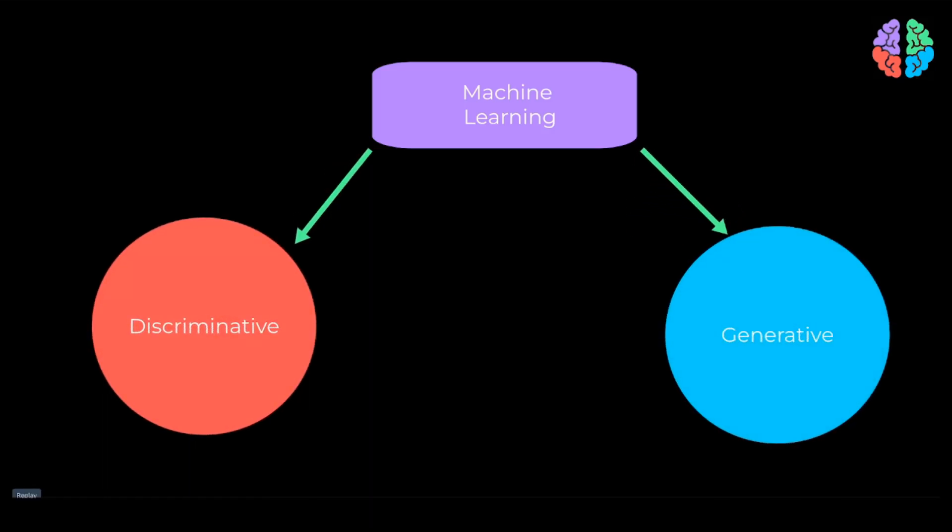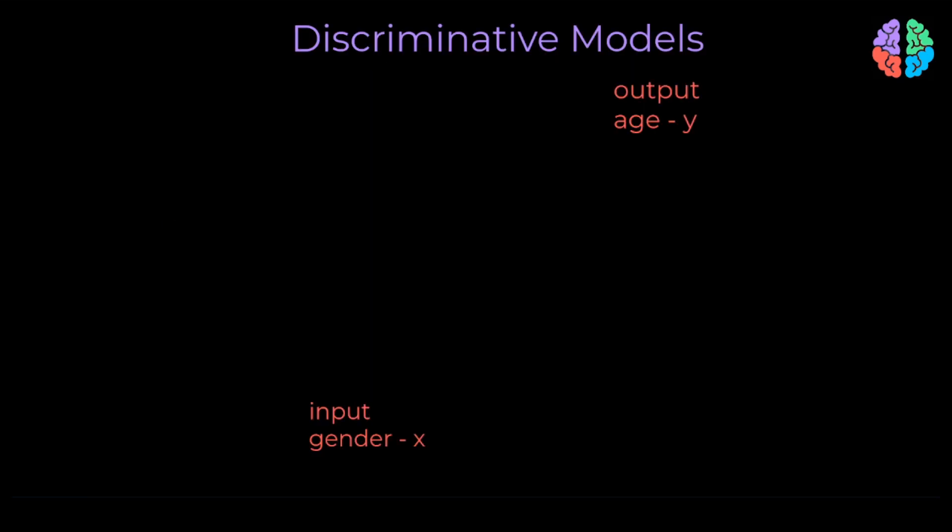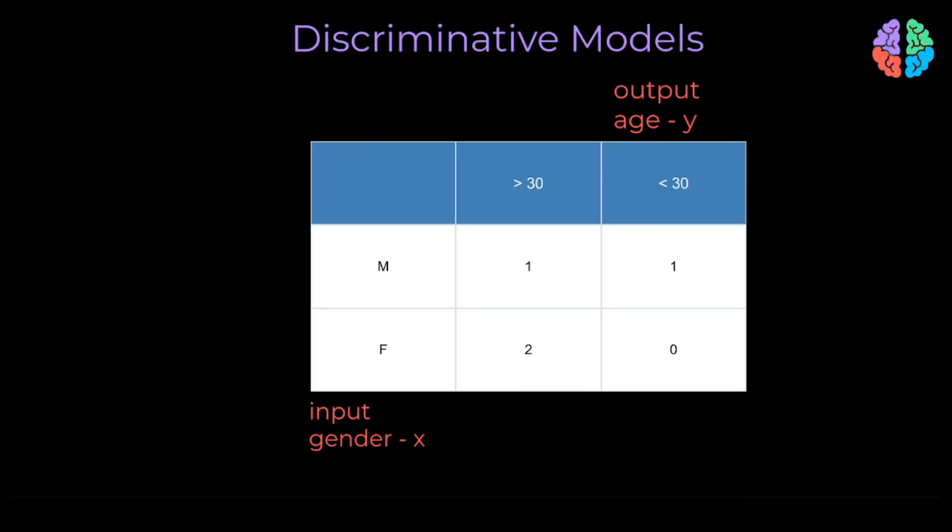Machine learning models can be broadly divided into discriminative or generative models. To understand the idea behind both these models, let's take a toy dataset of just four samples.